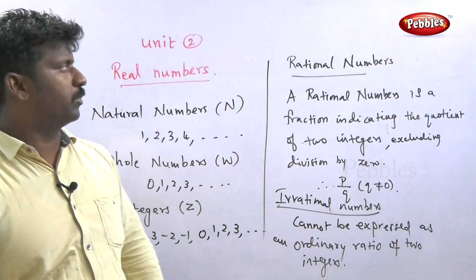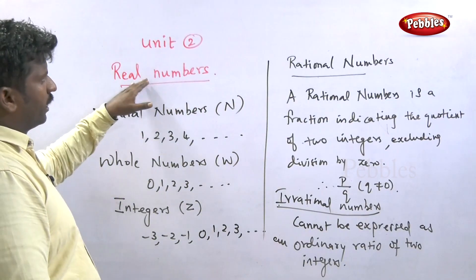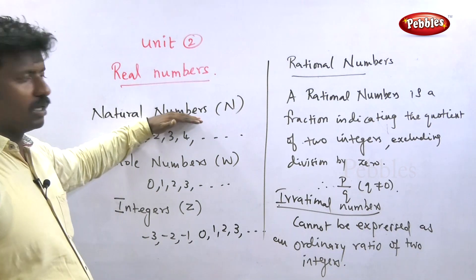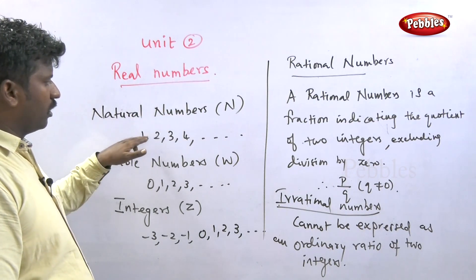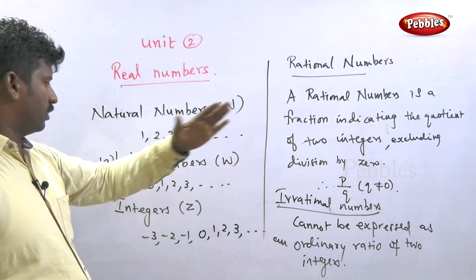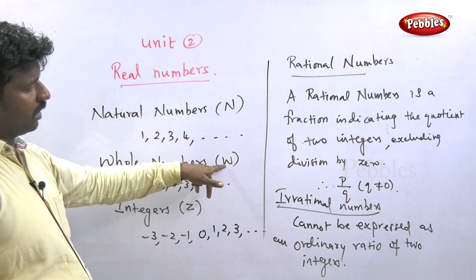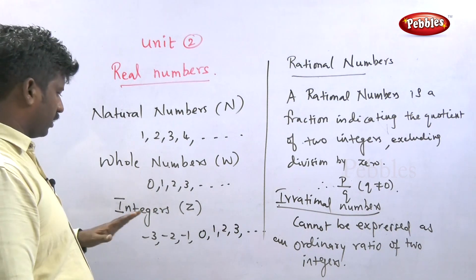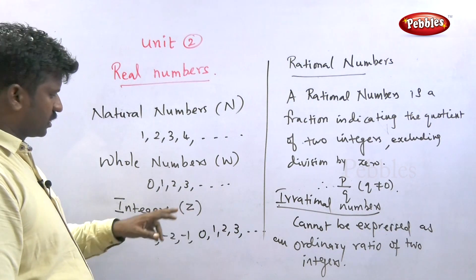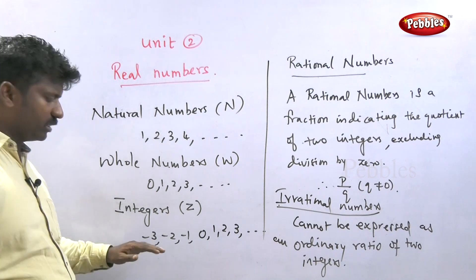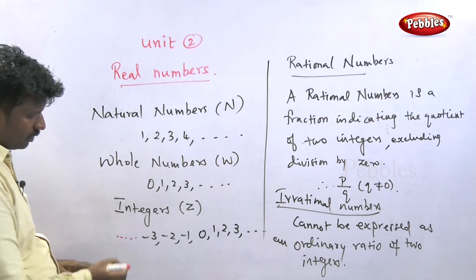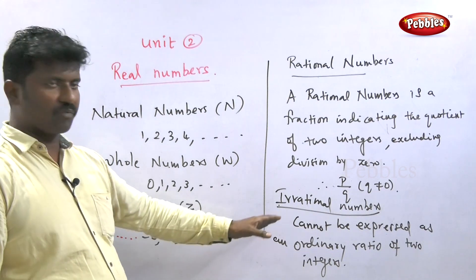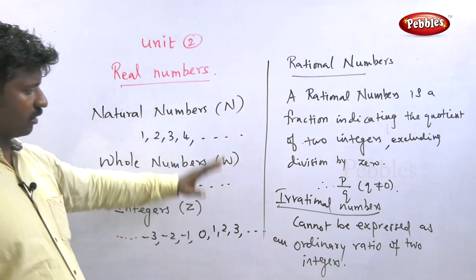Unit 2: Real Numbers. We cover the main number types. Natural numbers start from 1, 2, 3, 4, etc. Whole numbers are denoted by W, starting from 0, 1, 2, 3, etc. Integers are denoted by Z — they go in both directions: minus 4, minus 3, minus 2, minus 1, 0, plus 1, plus 2, 3, 4, 5, 6, etc.